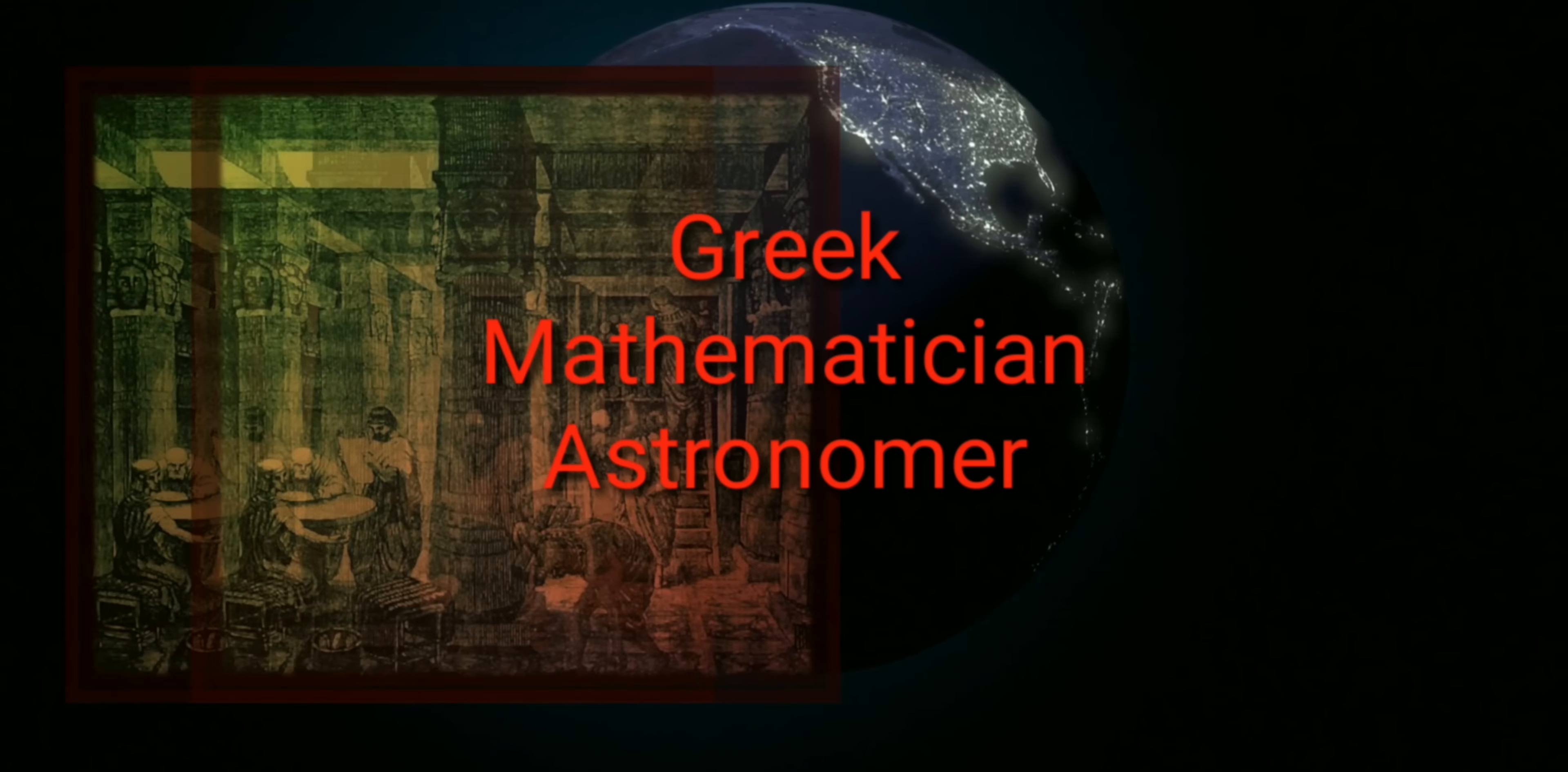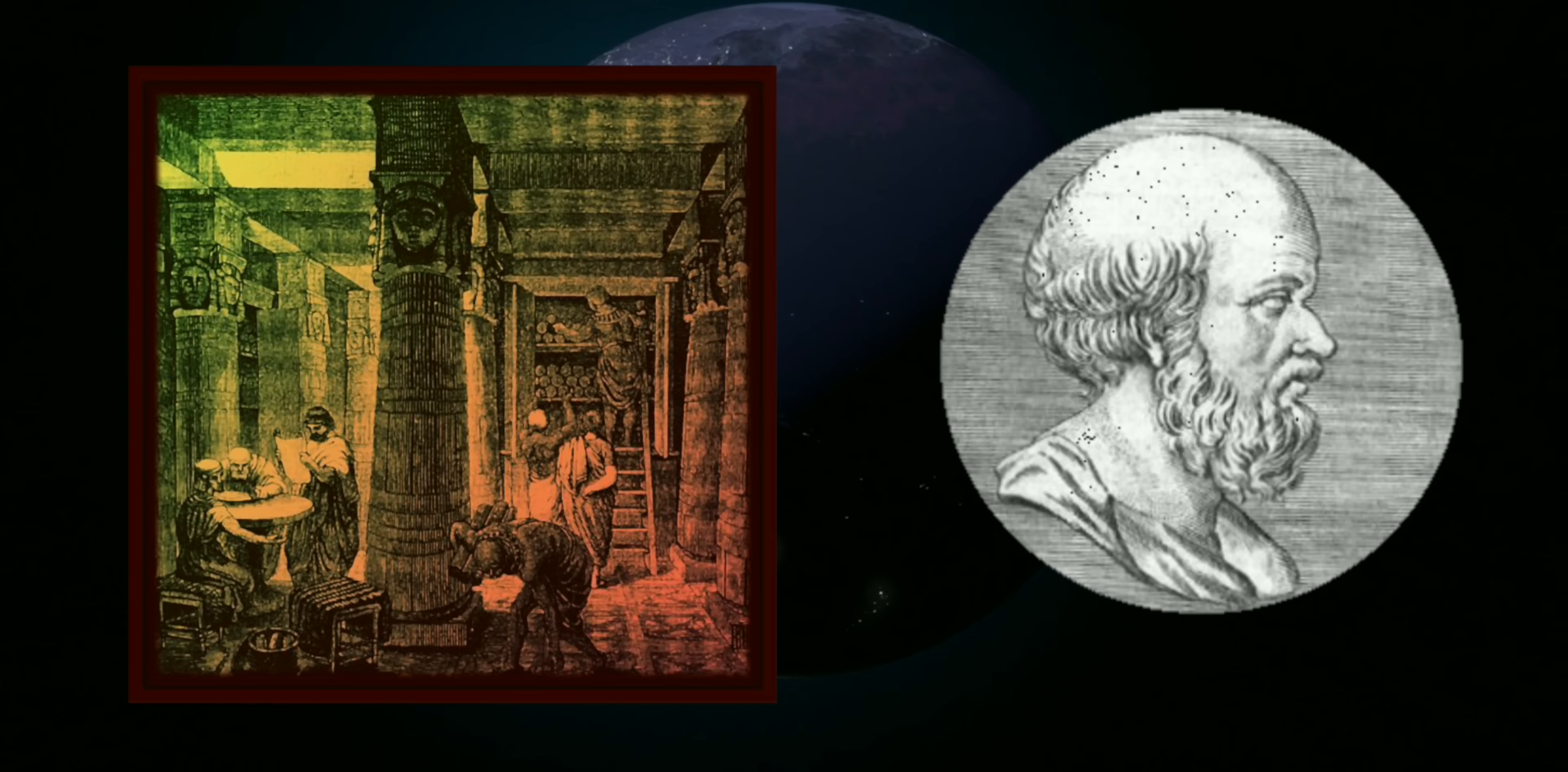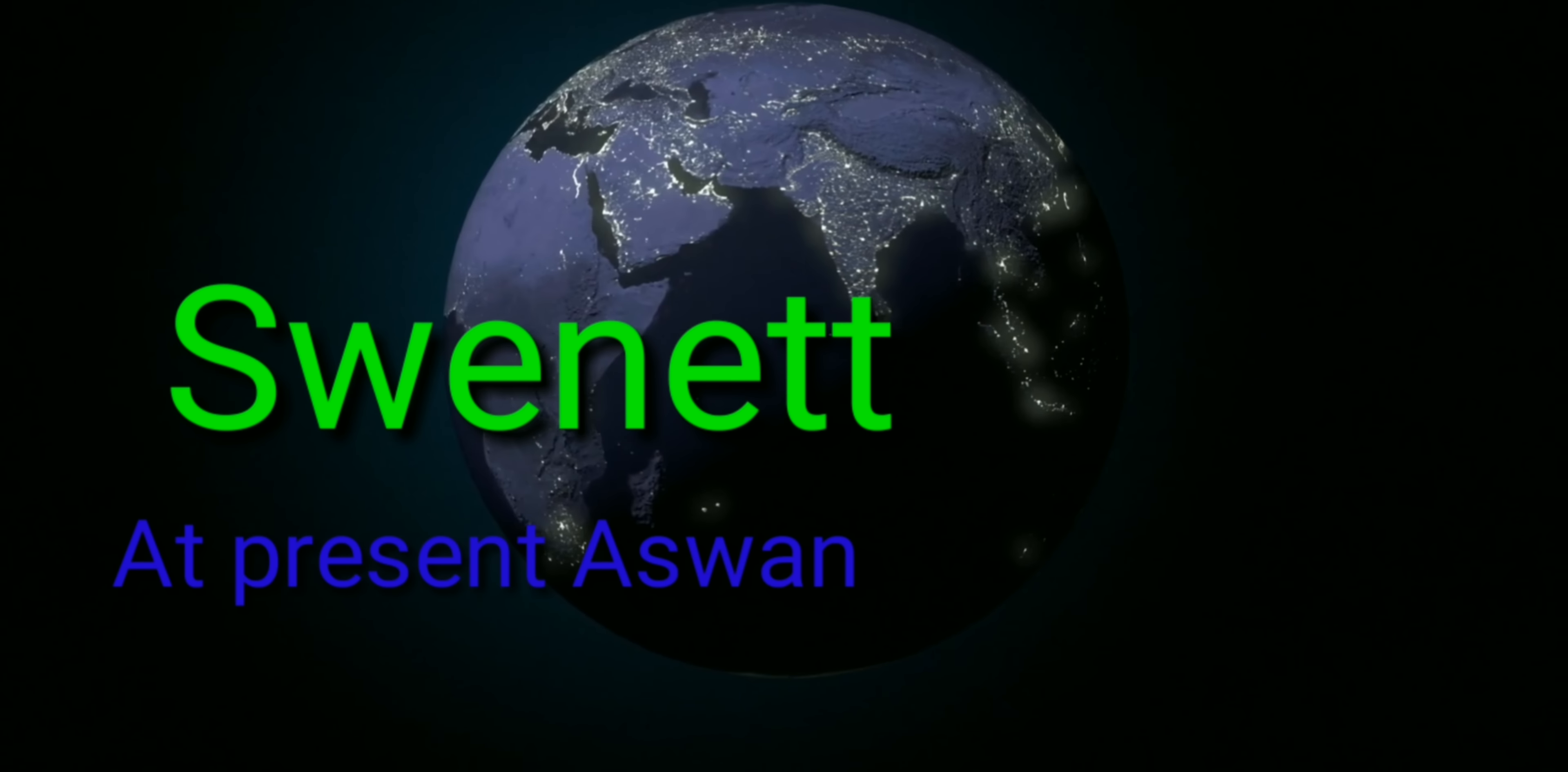The hero of this event was a Greek mathematician and astronomer. He was the chief librarian at the Library of Alexandria. His name is Eratosthenes of Cyrene.